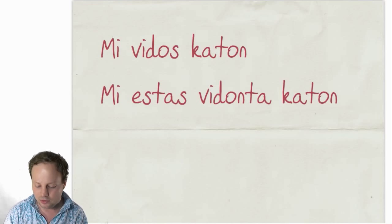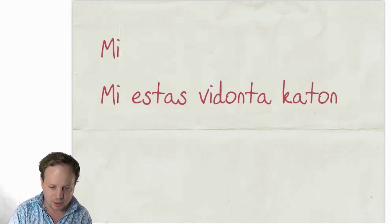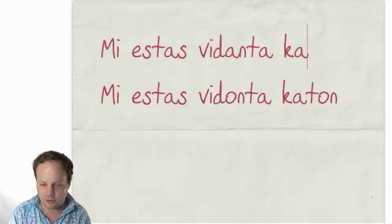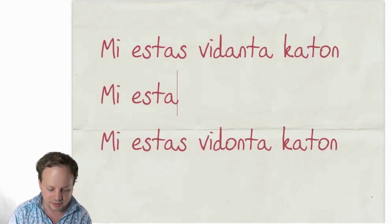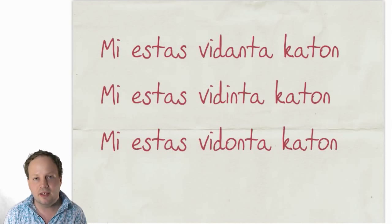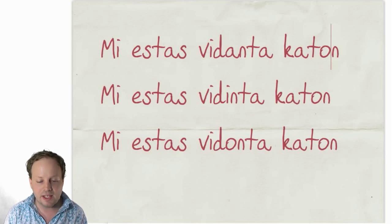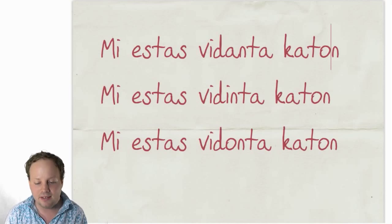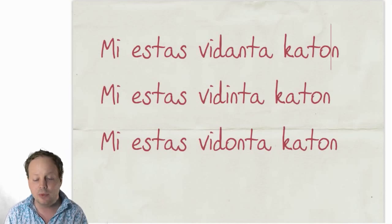So you've seen the three different forms. MI ESTAS VIDANTA KATON — I am seeing a cat. MI ESTAS VIDINTA KATON — I have seen a cat. MI ESTAS VIDONTA KATON — I am about to see a cat, I am going to see a cat.